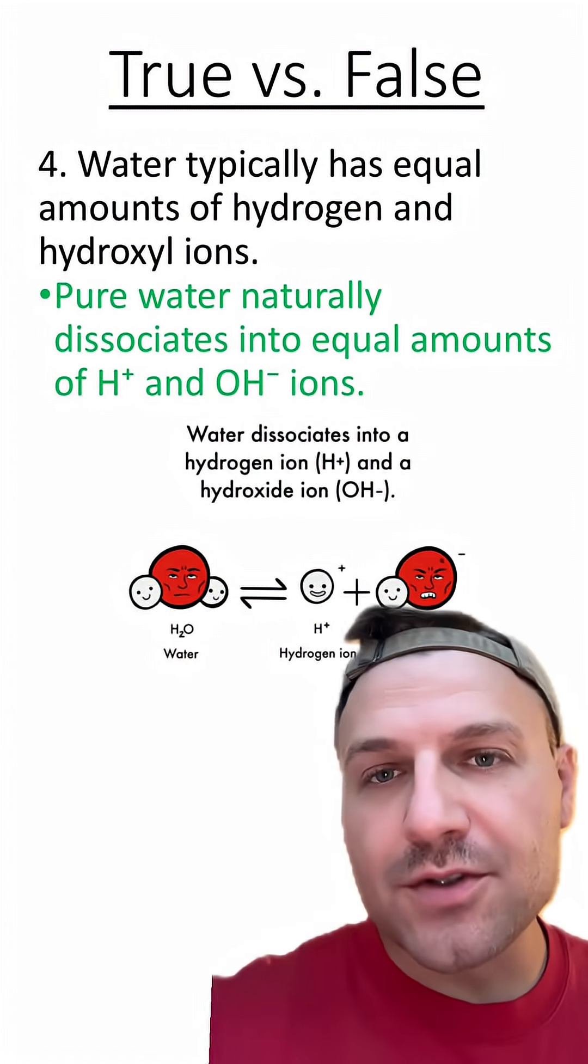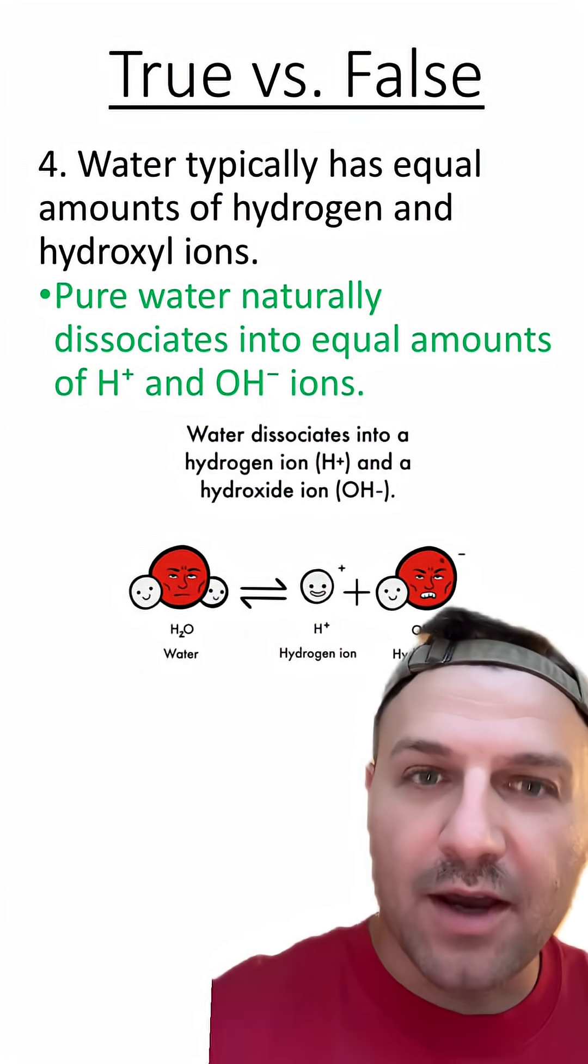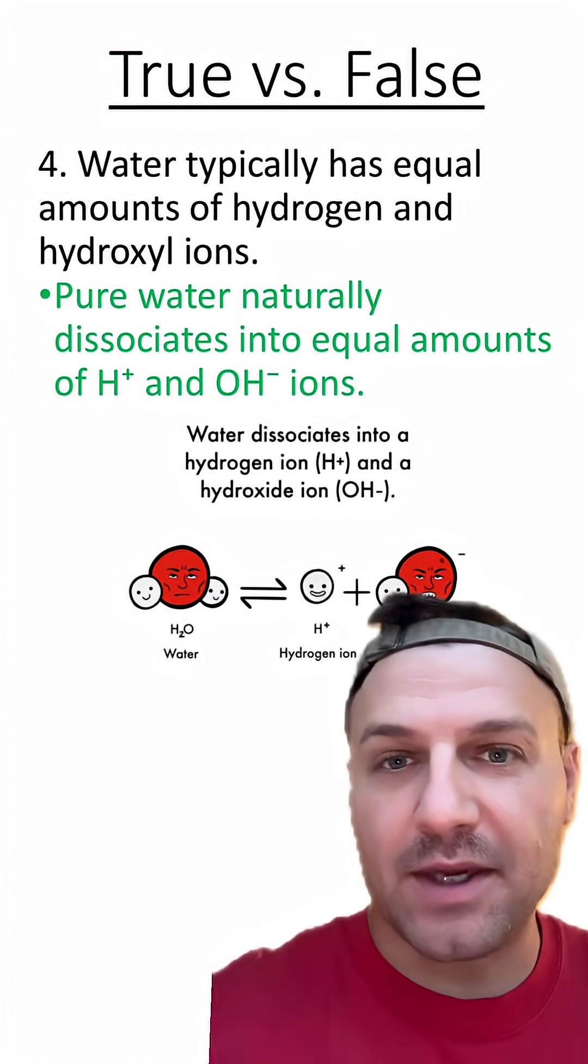And number four is also true because water typically dissociates into hydrogen and hydroxyl ions, making it neutral or having a pH of 7.